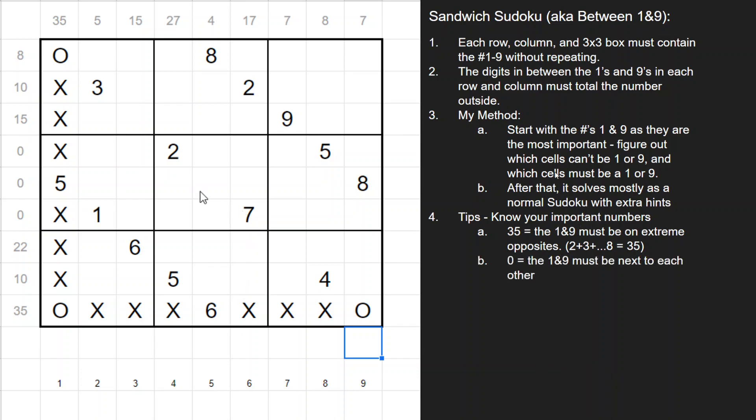So we found all the 35s. Next, I look for all the 0s because that's the exact opposite. Instead of having the 1s and 9s as far away from one another as possible, you know the 1s and 9s have to be right next to each other. So in this case, we see a 0 in this row. We know the 9 can't be here, so therefore the 9 must be here. Because if it were anywhere else, the sum in between would be greater than 0. So we can indicate the 9 goes there and x out all the other cells in that row.